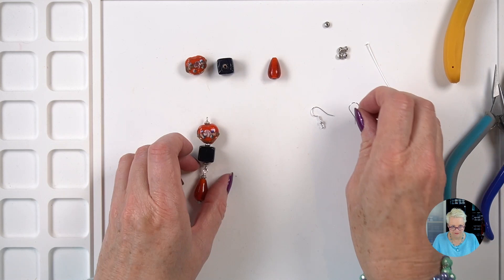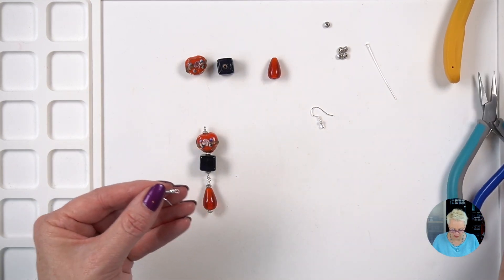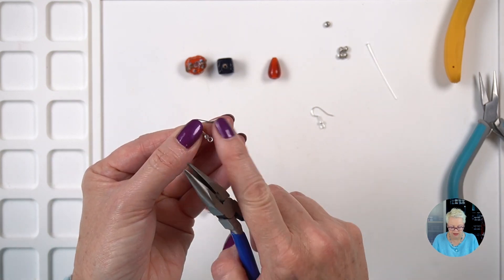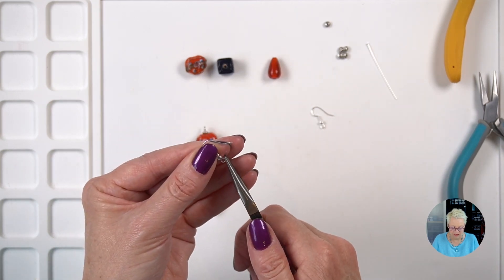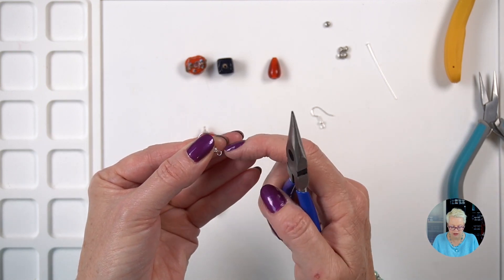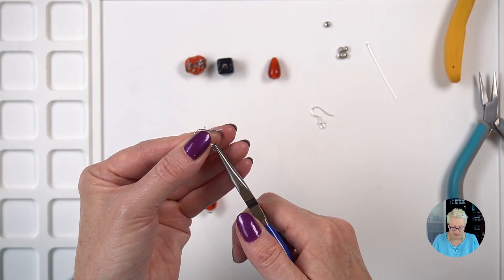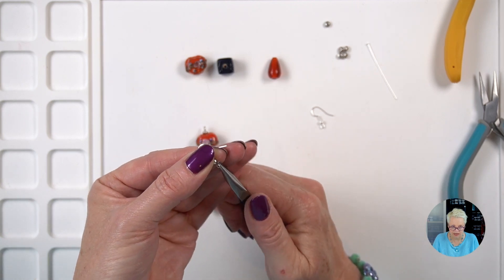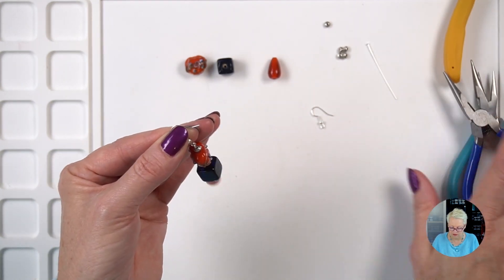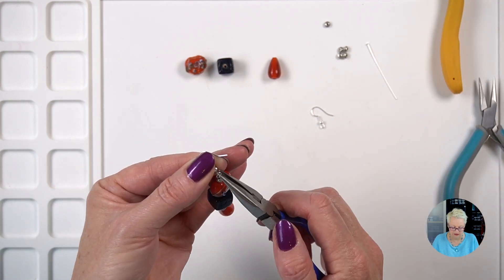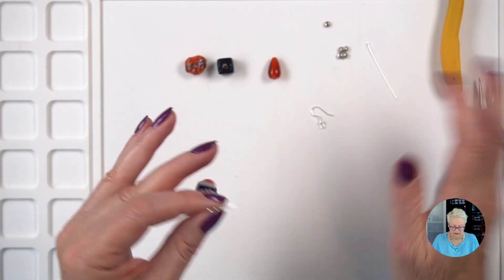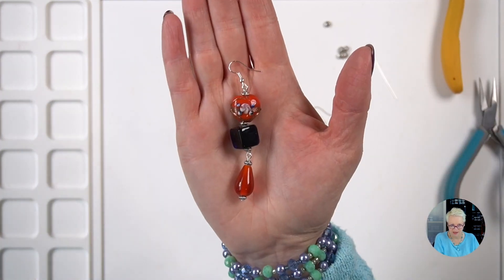And the only thing left to do is attach my ear wire. So I'm going to take the ear wire, hold it between my thumb and my finger, and I'm going to hold the loop on the side that opens, which is the inside, and do exactly the same thing. Just rotate up, pop it on, and close it. And there's my earring.